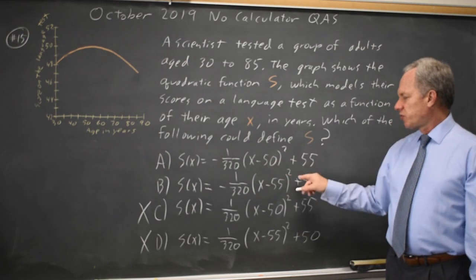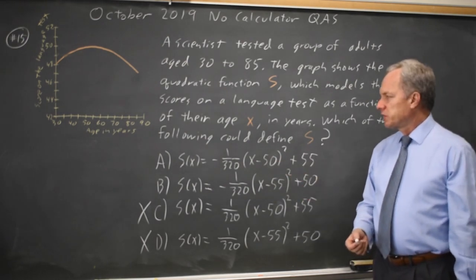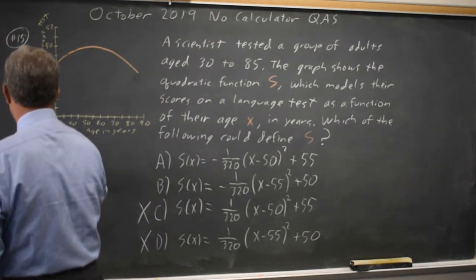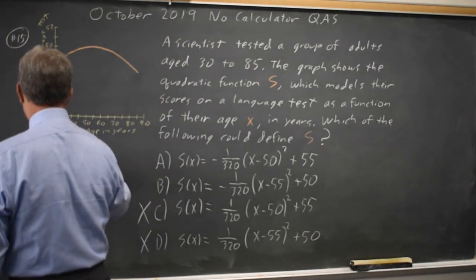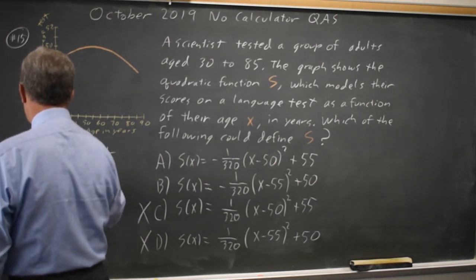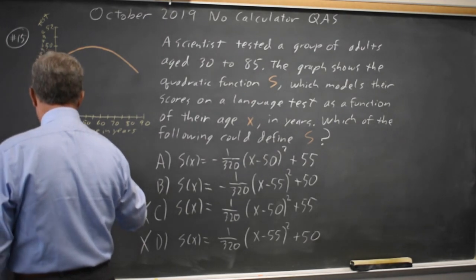And this is vertex form, so the question is what are the coordinates of the vertex? If you have S of X equals A times X minus H quantity squared plus K, the vertex is HK.